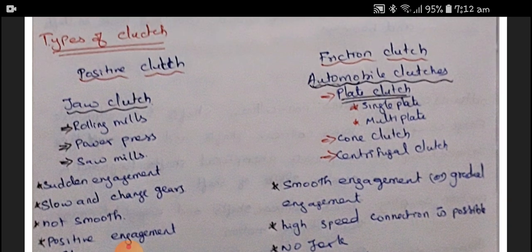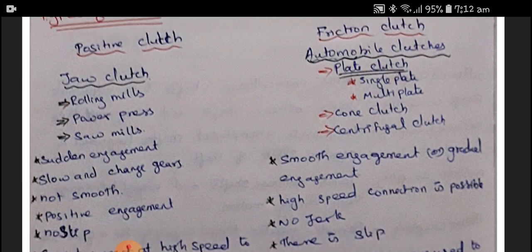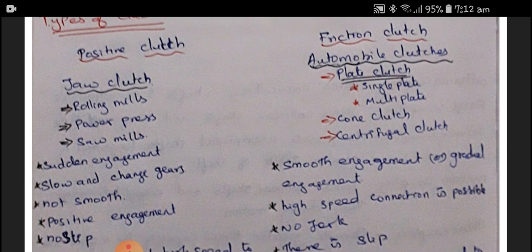In friction clutches, friction material like asbestos is used as a friction lining material. By means of friction, it can transmit power from driving to driven shafts. Friction clutches — the automobile clutches — have a single plate clutch as a subdivision. From the plate clutch, we have single plate and multi-plate clutches; other types include cone clutch and centrifugal clutches.